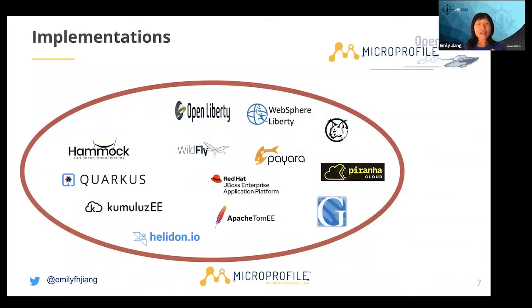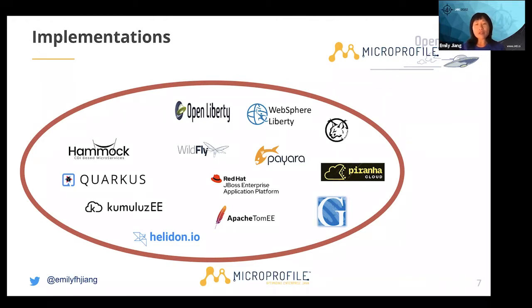There are many implementations that support and offer you MicroProfile APIs. In order to use the APIs from MicroProfile, you need to choose one of the implementations. As I mentioned earlier, I work on the project called OpenLiberty, and also WebSphere Liberty — both support these APIs. OpenLiberty was used to drive MicroProfile releases in the past couple of years. There's also WildFly, Quarkus, Helidon, Apache TomEE, KumuluzEE, and others available for you to choose from.